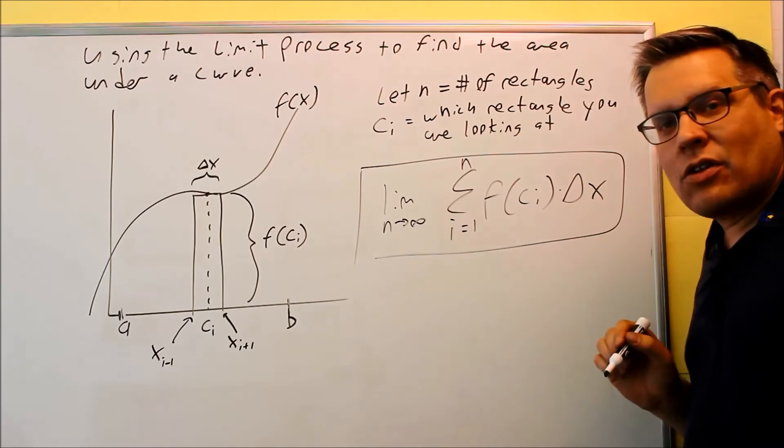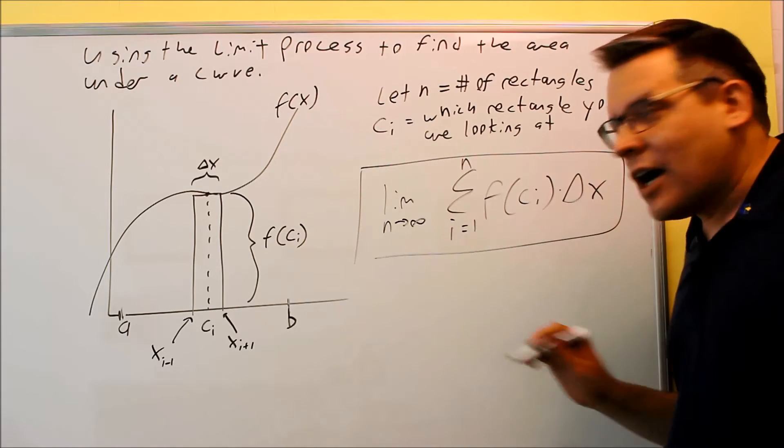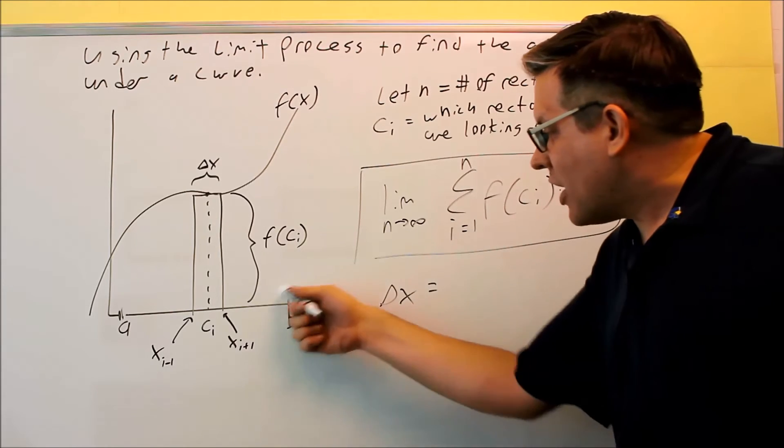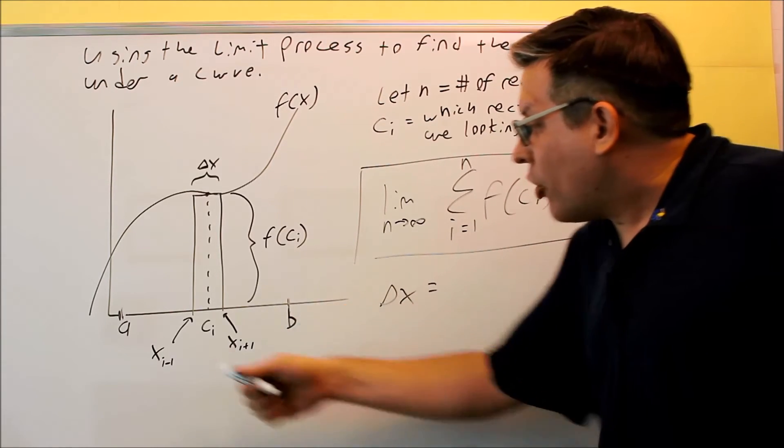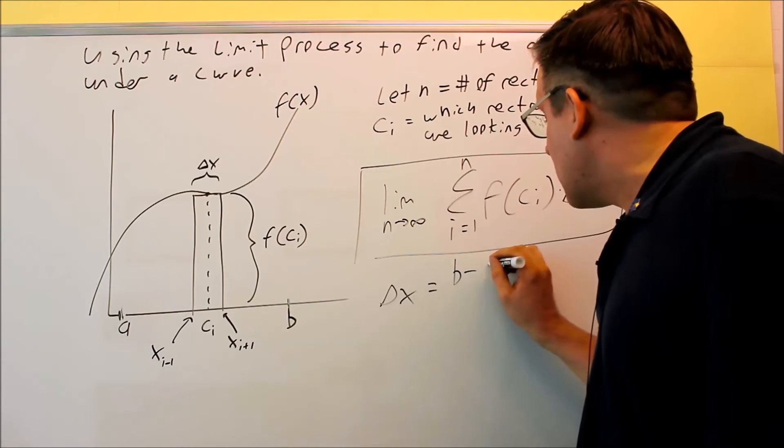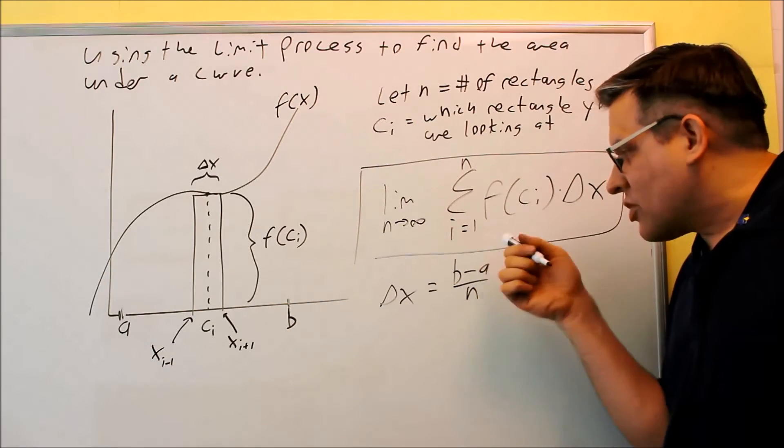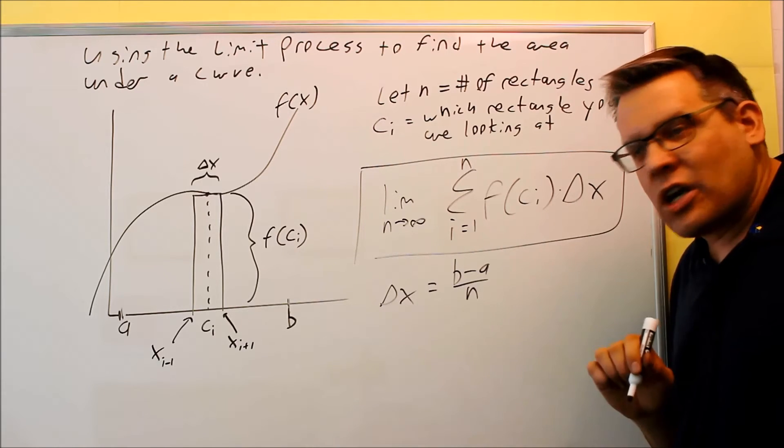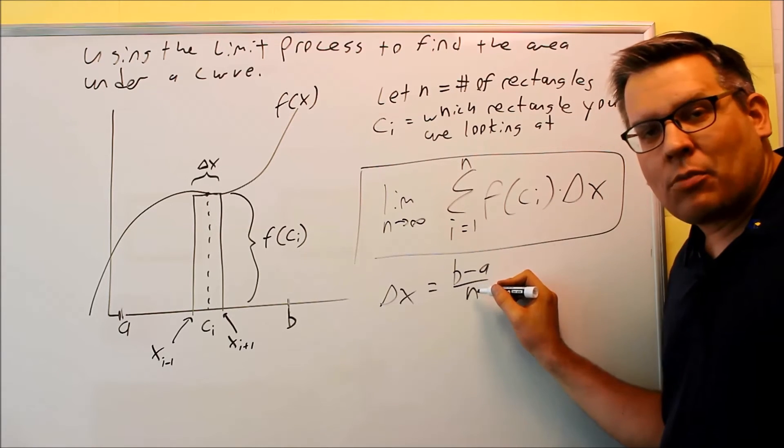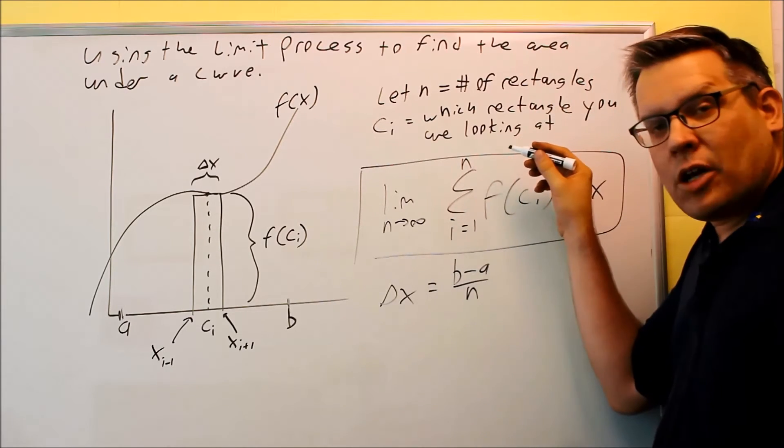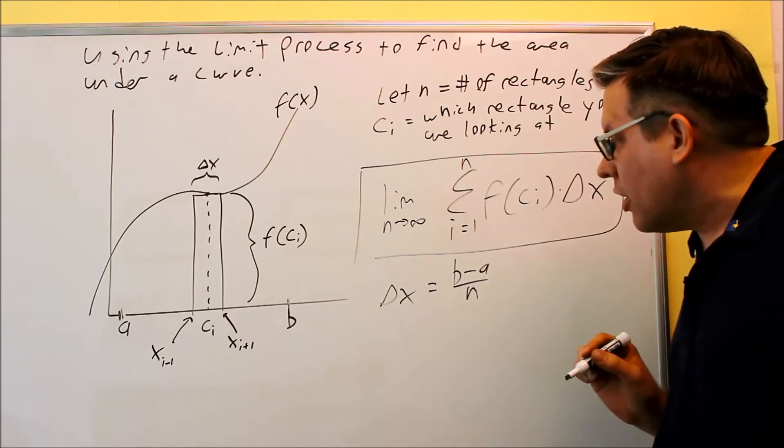Well, in order to do this, though, we have to know what delta X and CI are. So let's do delta X. Your delta X, you're going to find that by taking the right endpoint minus the left one. So we're going to do B minus A, and then we're going to divide that by how many rectangles we had. This is exactly what we did before in the previous section, except that usually they give you a number for n. In this case, we don't know exactly how many we have. It's going to be going to infinity, so that's why we use n there.